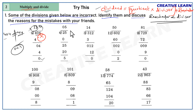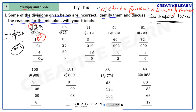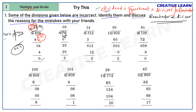We can also observe the mistake in the division process. After 4 ones of 4, there is a 0, but he directly took 4, skipping the 0. He should have kept 0 in the quotient, then taken 4. So the correct quotient should be 104.